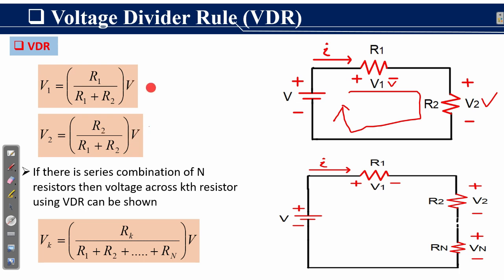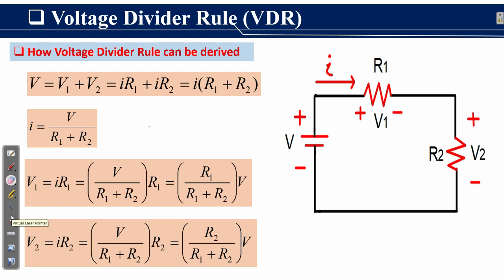It is clear from these two equations that if resistors are connected in series, a single formula can be used to find the voltage drop across any resistor in a series combination. For a combination of n resistors R1, R2, up to Rn, the voltage drop across the kth resistor is given by: Vk equals Rk over R1 plus R2 plus ... plus Rn, multiplied by the applied voltage V.